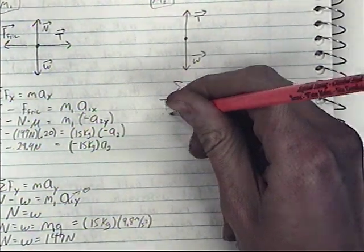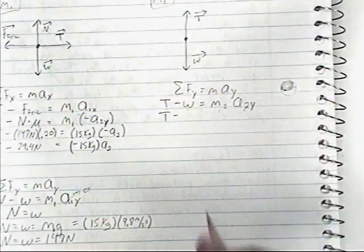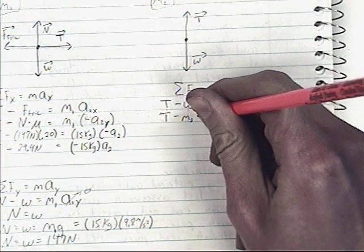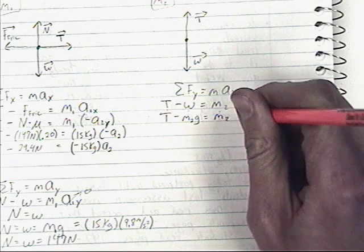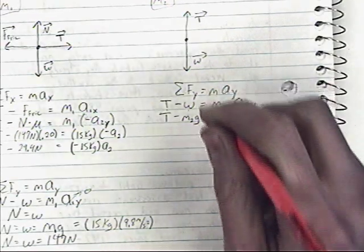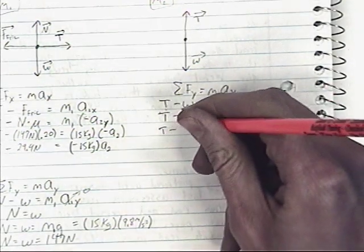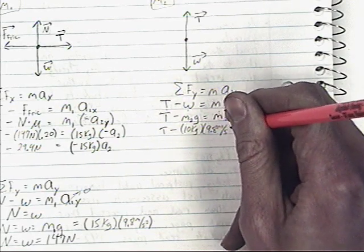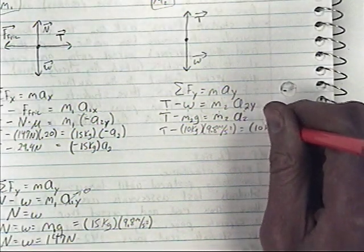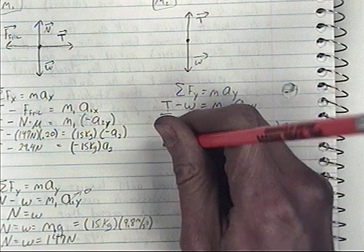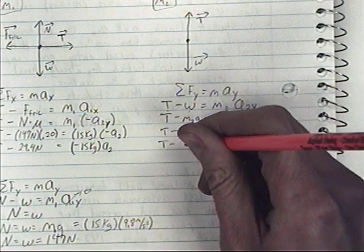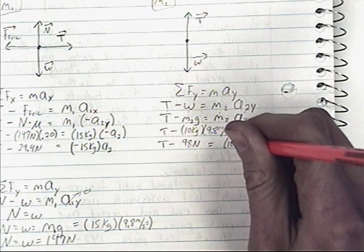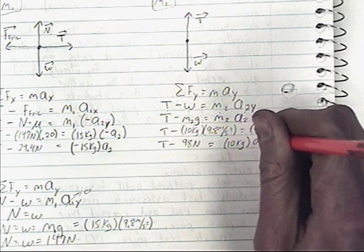For the second equation, tension minus the weight of mass two (mass two times gravity) equals mass two times acceleration two. Plugging in: tension minus 10 kilograms times 9.8 m/s² equals 10 kilograms times a2, which simplifies to: tension minus 98 newtons equals 10 kilograms times a2.